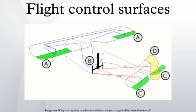Centering the rudder pedals returns the rudder to neutral and stops the yaw. The ailerons primarily control roll.